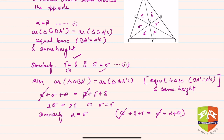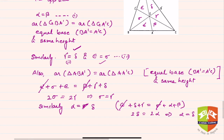So you can write two gamma equals two alpha, giving alpha equals delta as well. Now we know sigma equals gamma and alpha equals delta. Tracing the chain: alpha equals beta, alpha equals delta, delta equals gamma, gamma equals sigma, and sigma equals epsilon. Hence all six areas are equal.